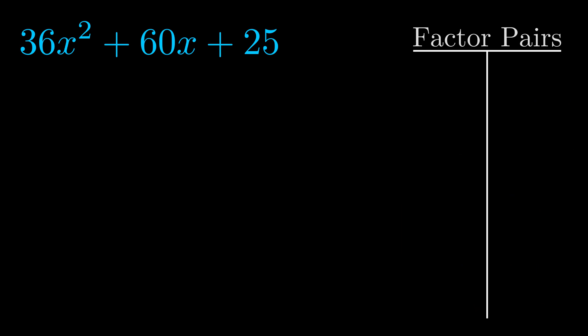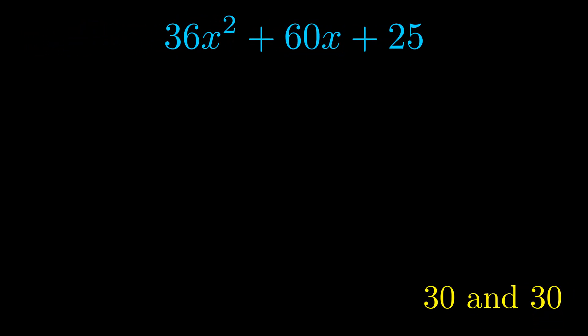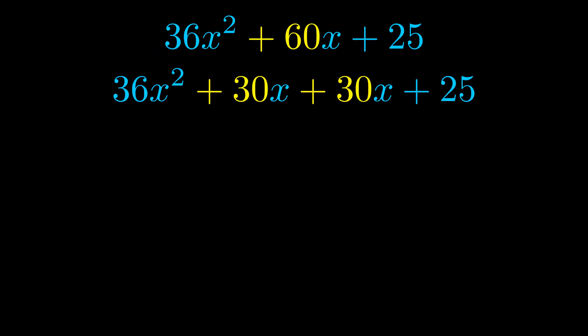Now once we have this factor pair, what we want to do is use it to split up the b value. Notice how I'm going to keep my first term and my last term completely unchanged. It is only this b term highlighted in yellow that gets expanded into this correct factor pair.